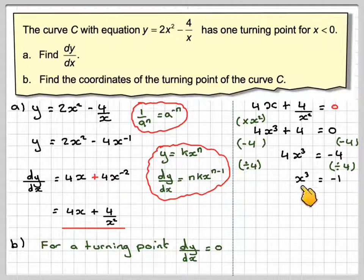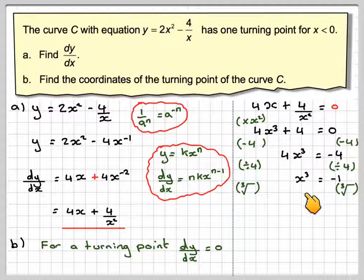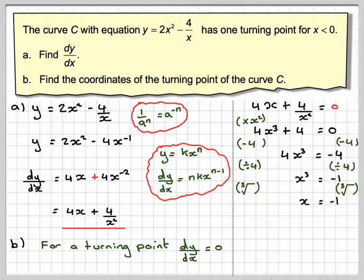To find x, we need to take the cube root of both sides. The cube root of x cubed is x. The cube root of minus 1 is, in fact, minus 1, because minus 1 times minus 1 times minus 1 is minus 1. So the x-coordinate is minus 1.